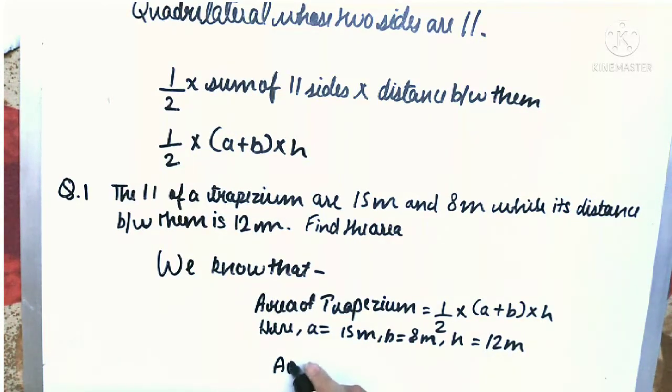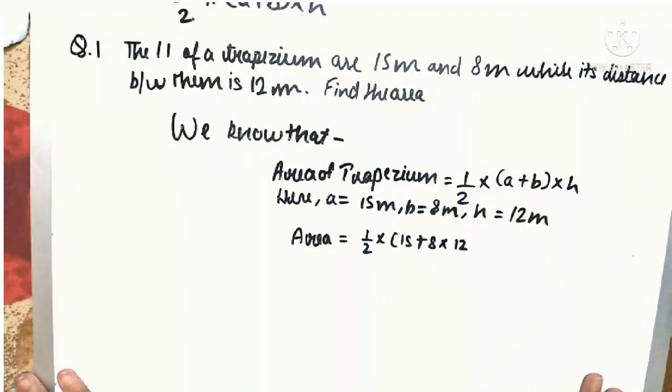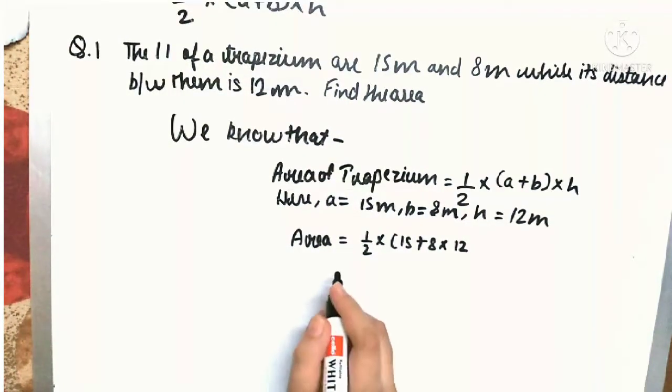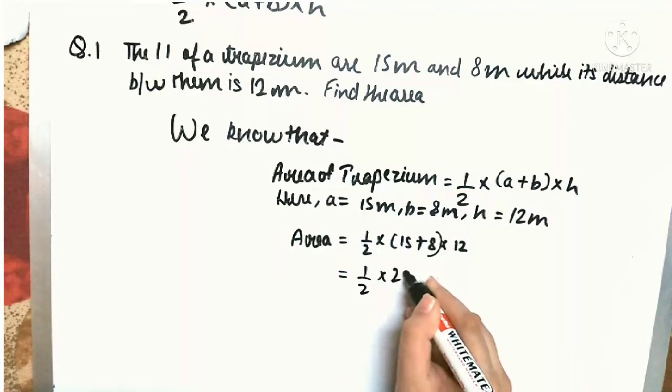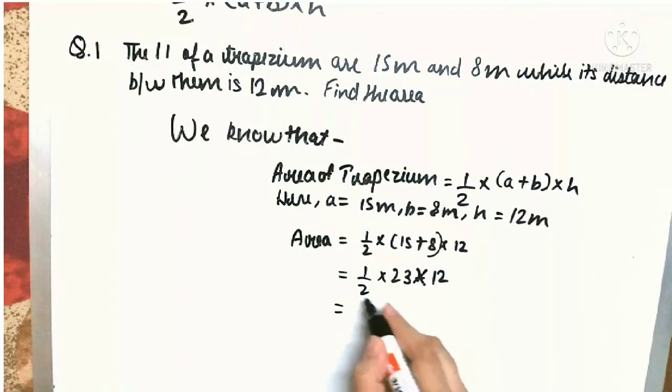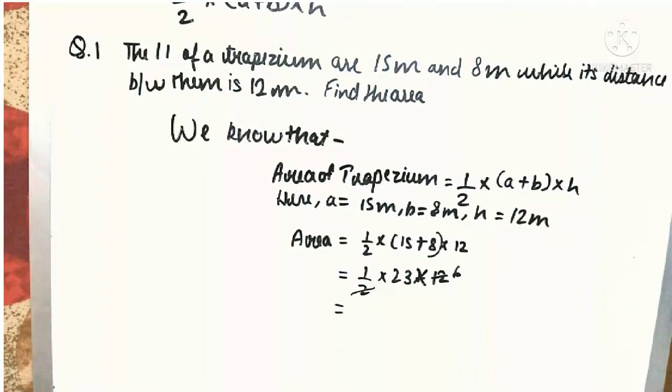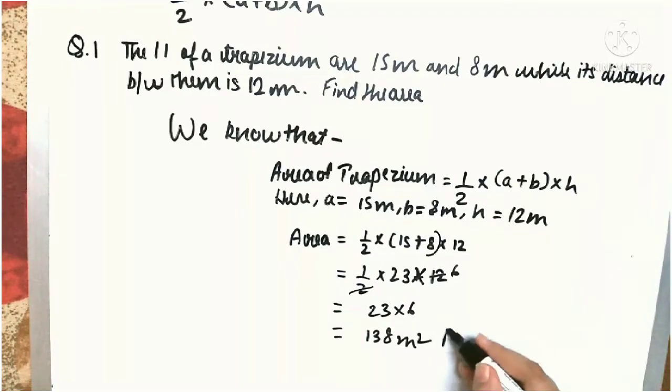So the area will be half into 15 plus 8 into 12, which means half into 23 into 12. 2 and 12 will be cancelled out, we will be left with 6. 23 into 6 will be 138 meter square. So that is our answer.